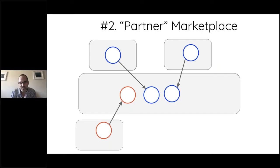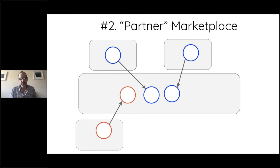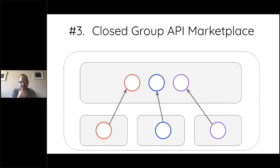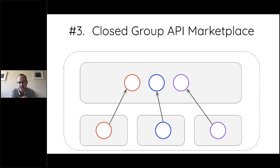Scania's center of excellence, which was doing all the integration before, now focuses on best practices, managing that marketplace, and helping teams become more self-organized. The second pattern for federation is the partner marketplace, where you see some APIs from the organization itself but partners also publish APIs into that portal. The prime example is Bank of New York Mellon, where blue APIs are provided by the bank and red APIs are provided by their partners.